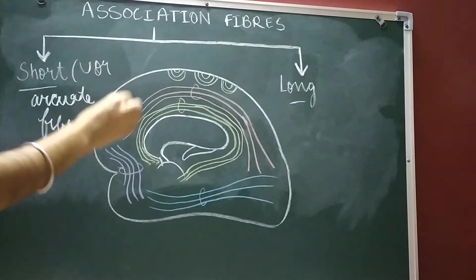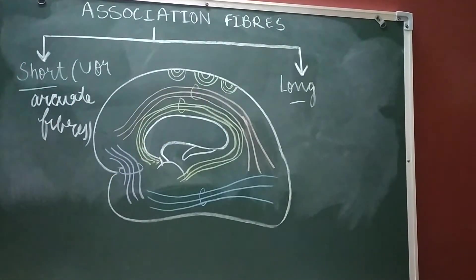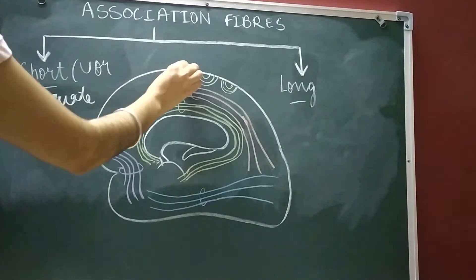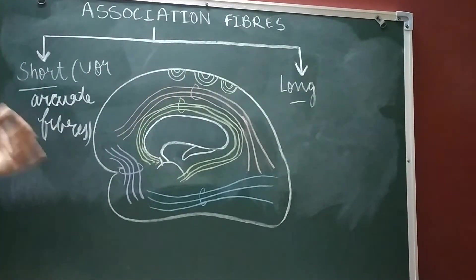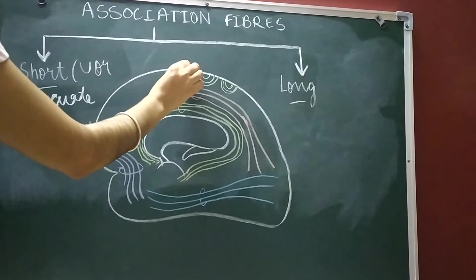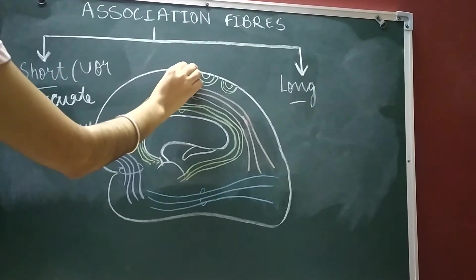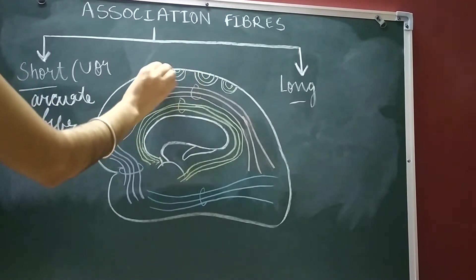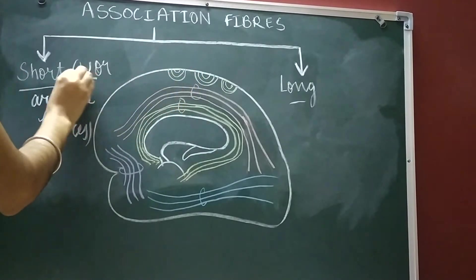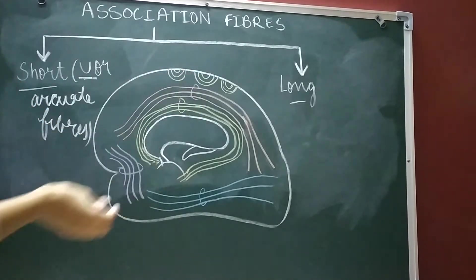In the diagram, these are the short association fibers or U-fibers. They connect the adjacent gyri by hooking around the sulcus. You can see one gyrus here and another here — they connect one gyrus with the other, and as you can see, these are called U-fibers because they interconnect in such a way that a U-shape is formed.